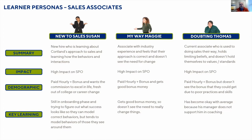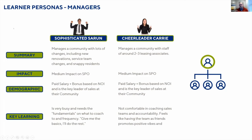As we looked at this, we also realized there's a whole other set of personas we need to identify — our management team — because they have different personas and are the leaders of the sales process. We have Sophisticated Sarun, who is that high energy, high level, very quick community manager who does all the fundamentals and gets to it, but he's always on the go. And then we have Cheerleader Carrie, who is very interactive with her team but is not always comfortable coaching them because she's afraid of holding them accountable — she likes to have positive vibes within the team.